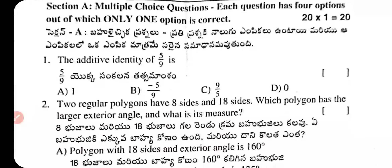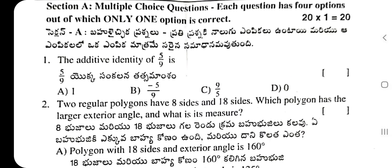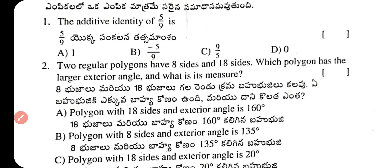Question 1: The additive identity of 5/9 is — the answer is A, zero. The additive identity is zero because adding zero to any number does not change its value.